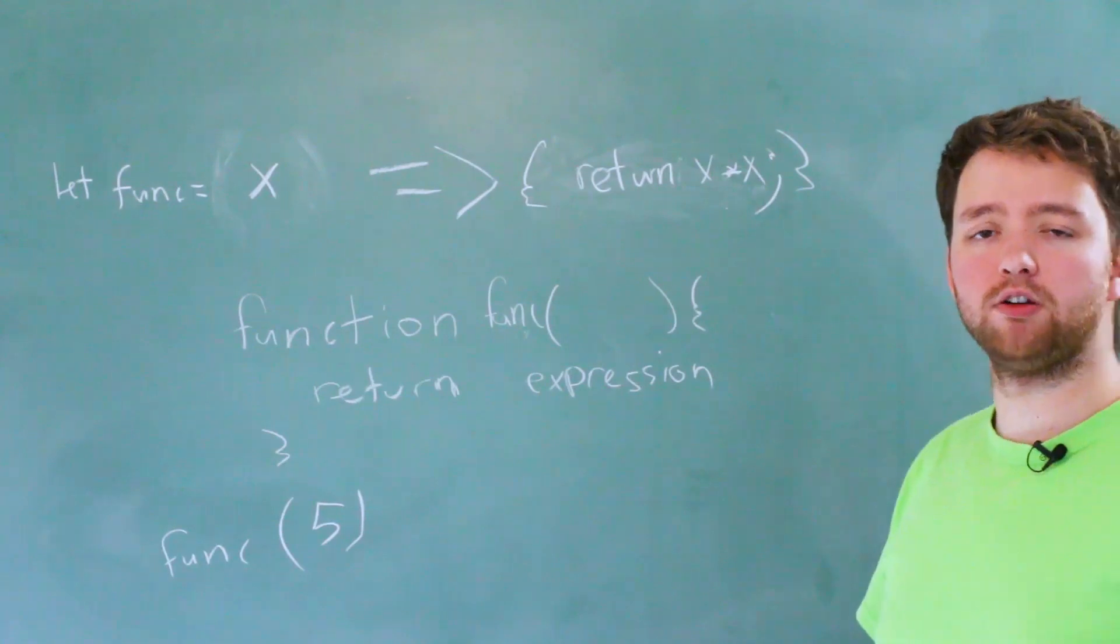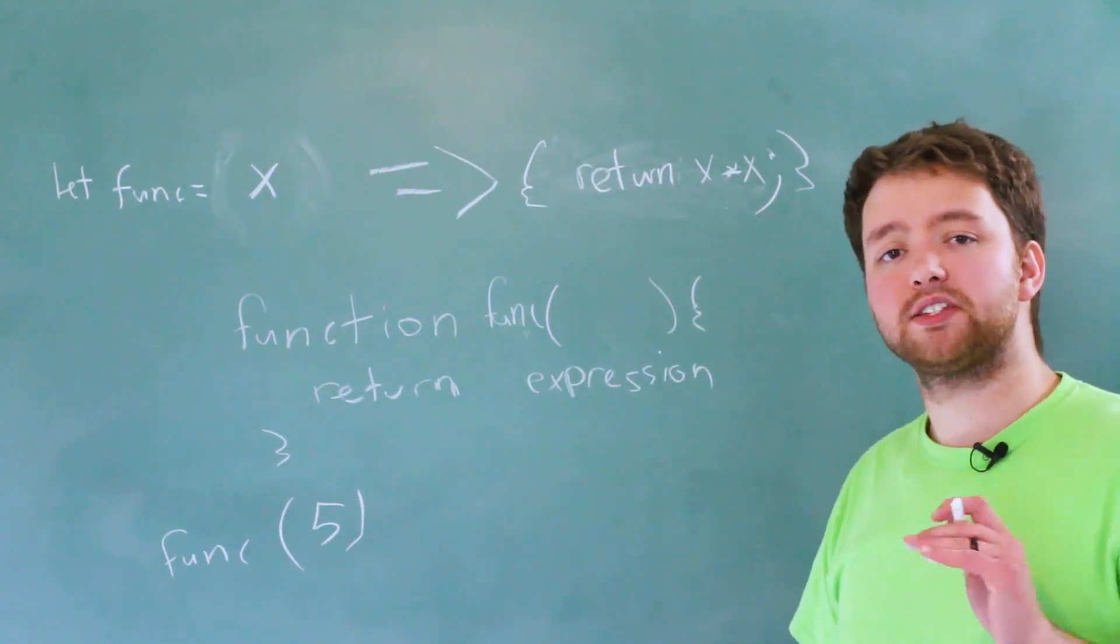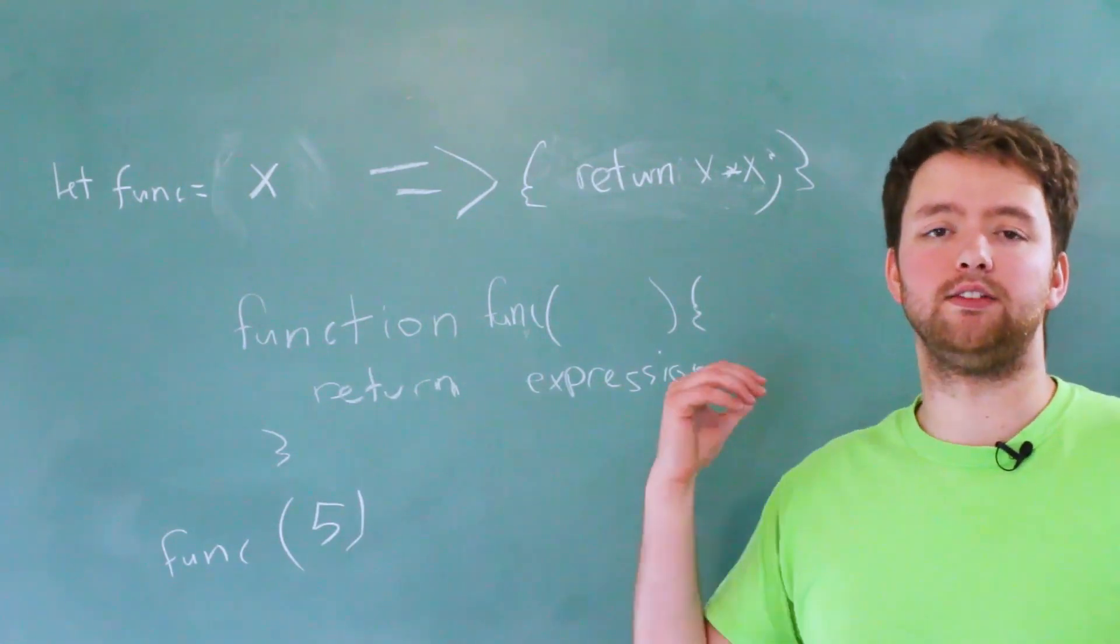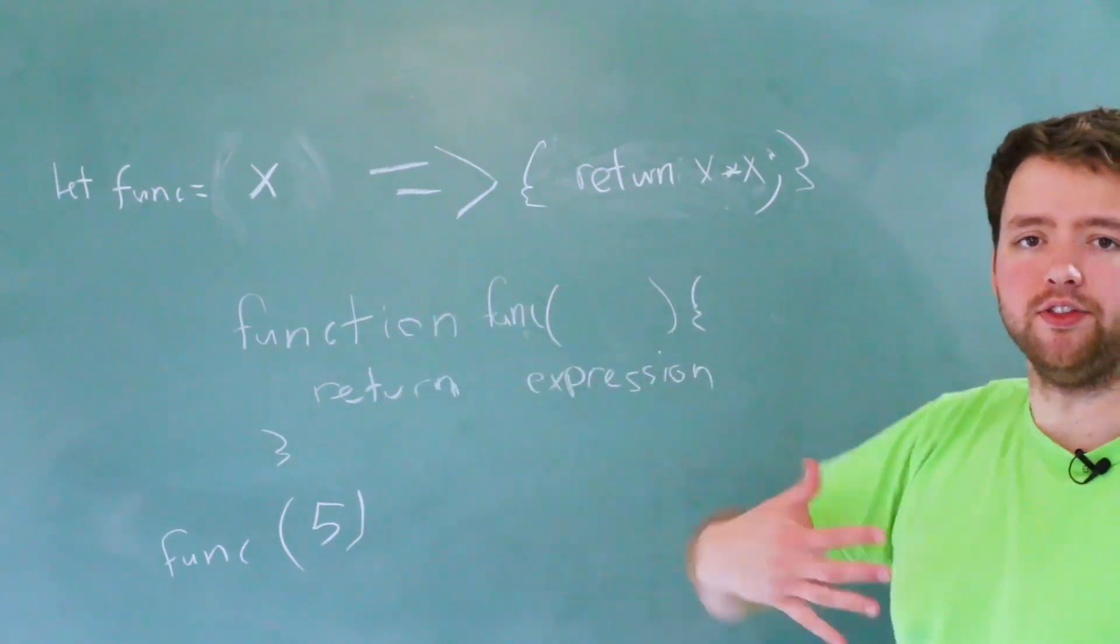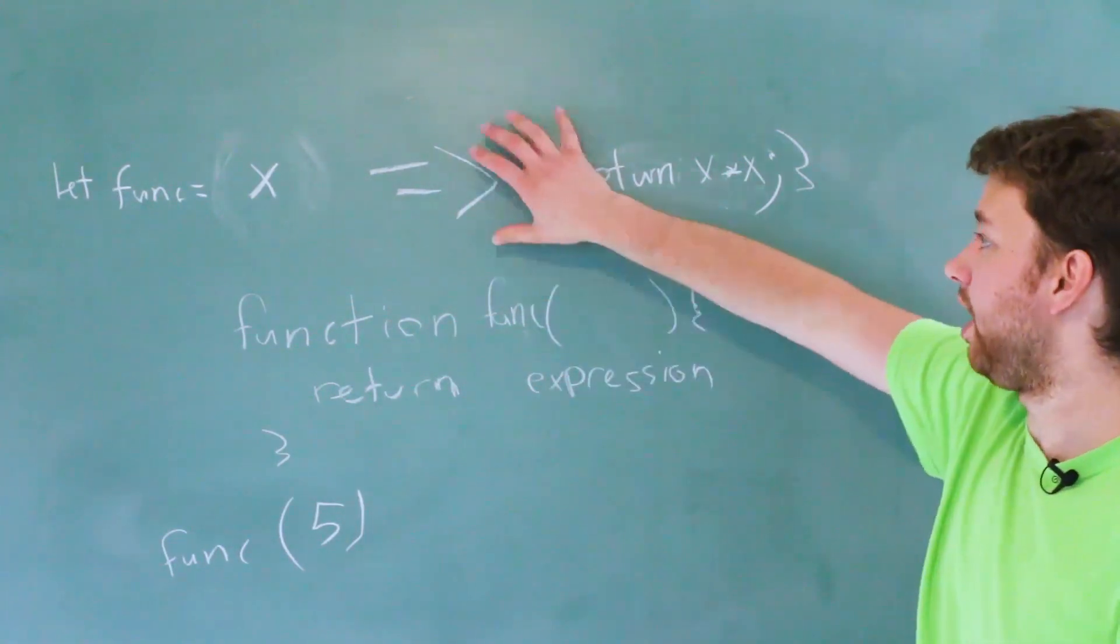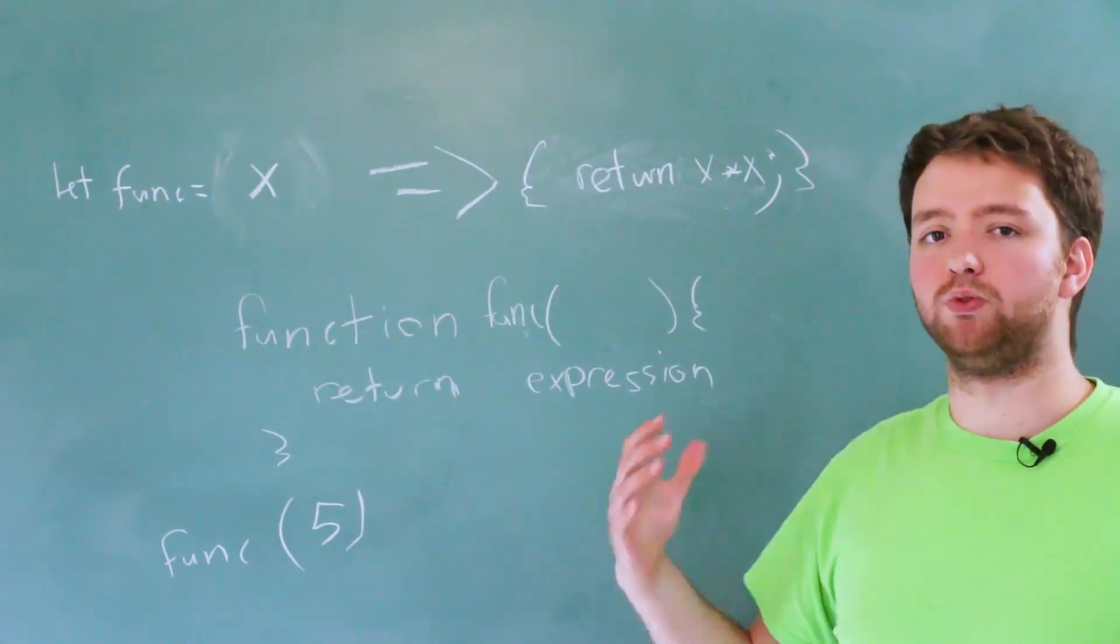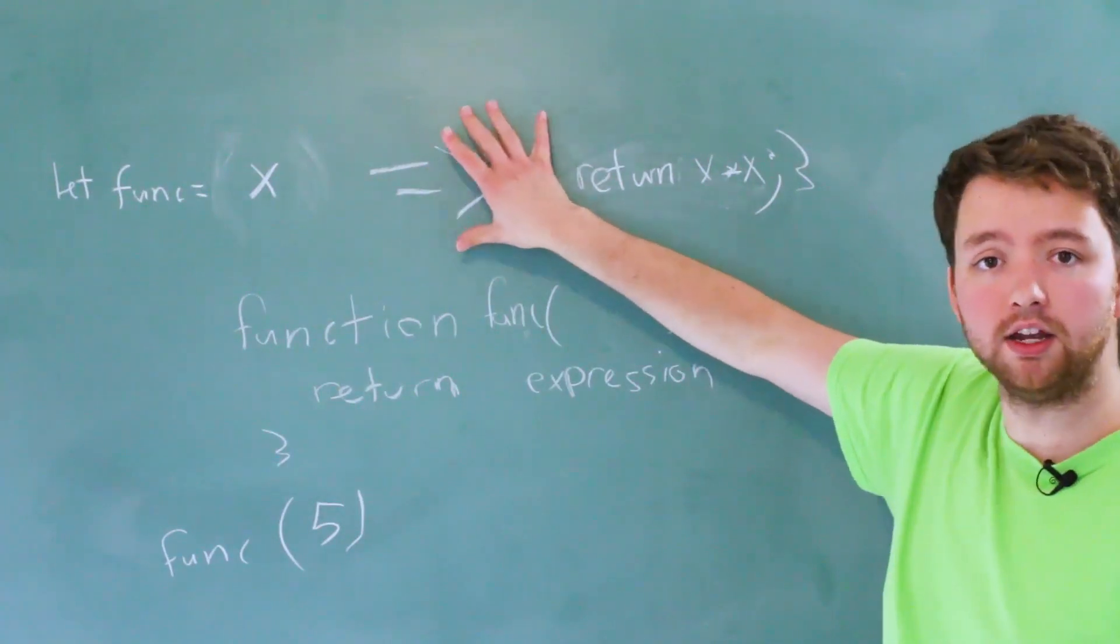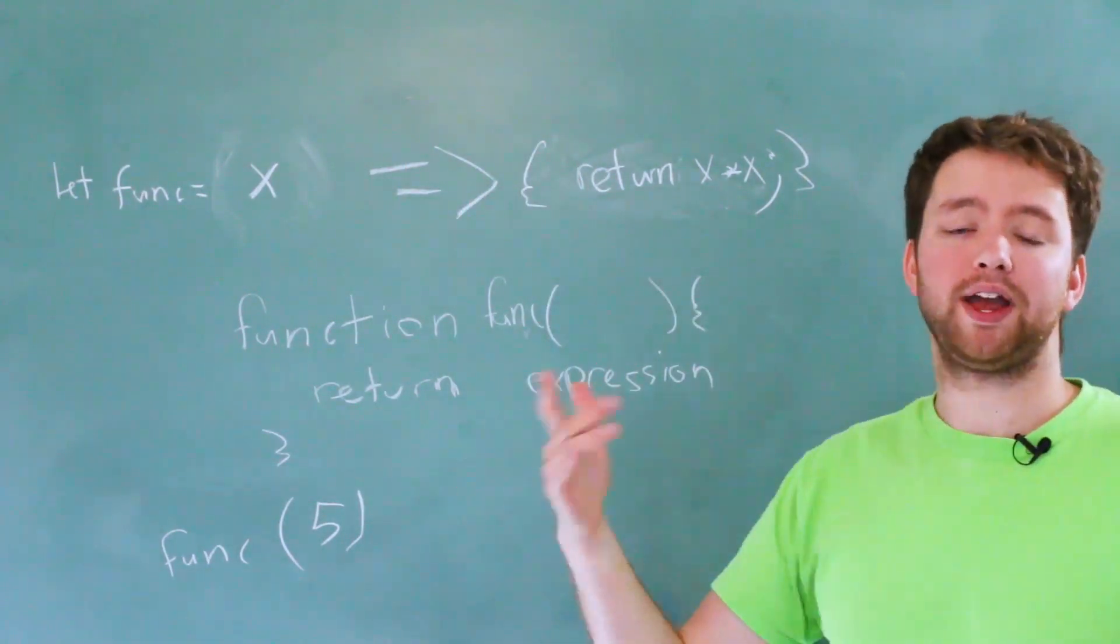Now, what is special about arrow functions? We're going to get into this in a lot of detail in the upcoming videos, but the thing that's special about arrow functions is the keyword 'this.' So with normal functions, 'this' changes based on how you call the function. With arrow functions, the value of 'this' is always going to be the same, and it's determined by where the function is created rather than how the function is called.